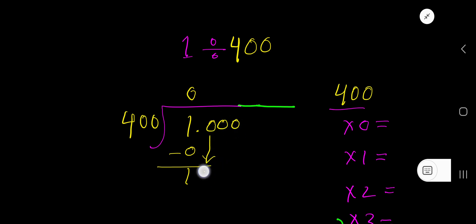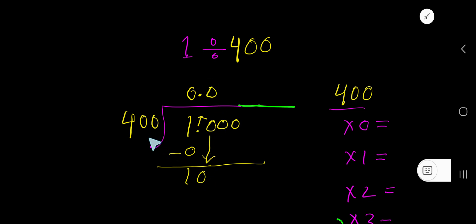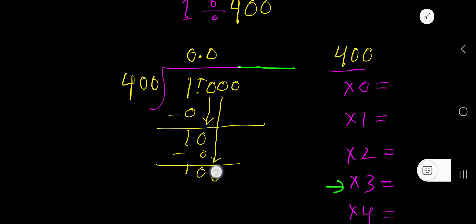Bring down the first 0. Before this 0 there is a decimal, and the decimal must come to the quotient as well. Now 400 goes into 10 how many times? 0 times, because 10 is less than 400. 0 times 400 gives me 0. If you subtract you get 10. Bring down the second 0. Now 400 goes into 100 how many times? 0 times, because 100 is less than 400. 0 times 400 gives you 0. If you subtract you get 100.